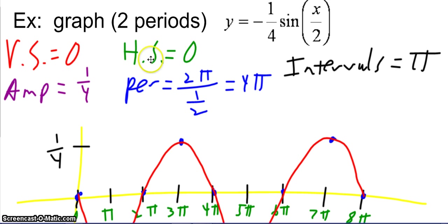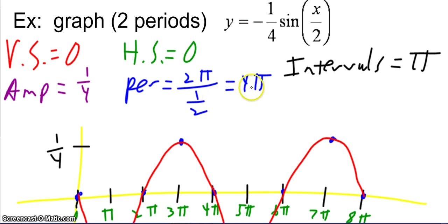The vertical shift is zero, horizontal shift is zero, amplitude is positive one fourth, but the negative will affect the graph. The period is going to be four pi — two pi over one half — and the intervals are pi.